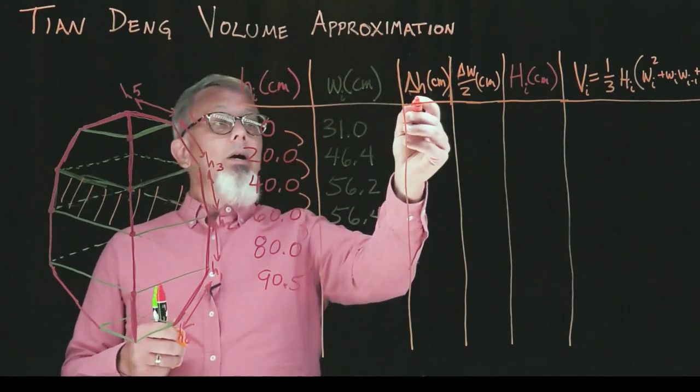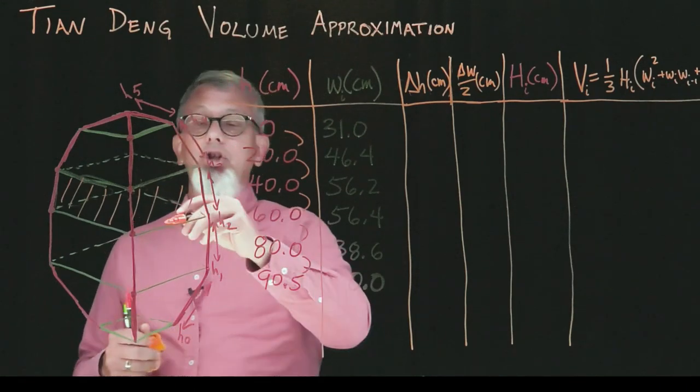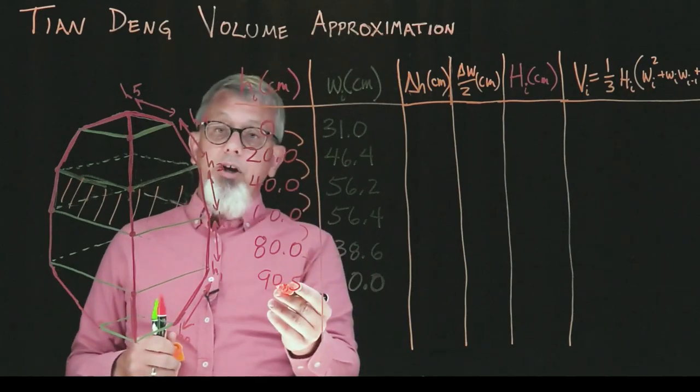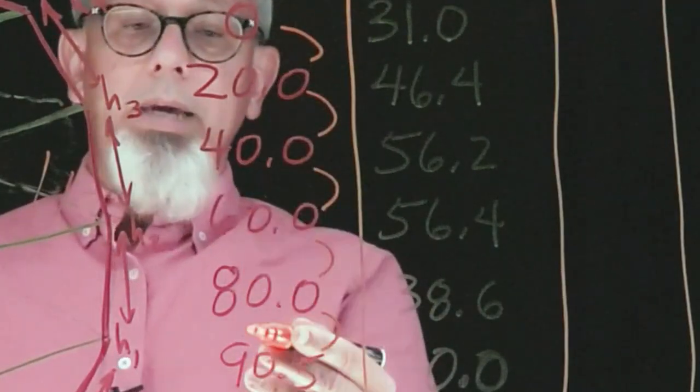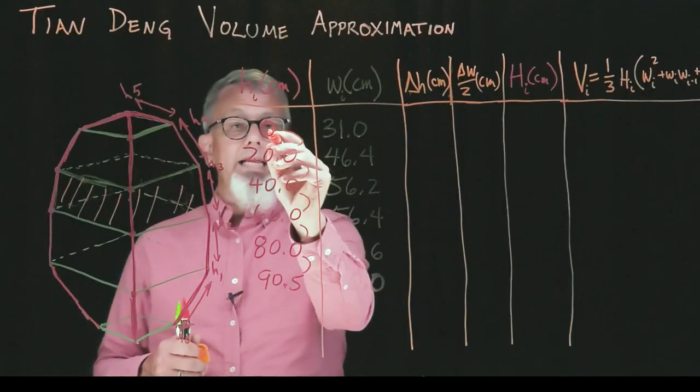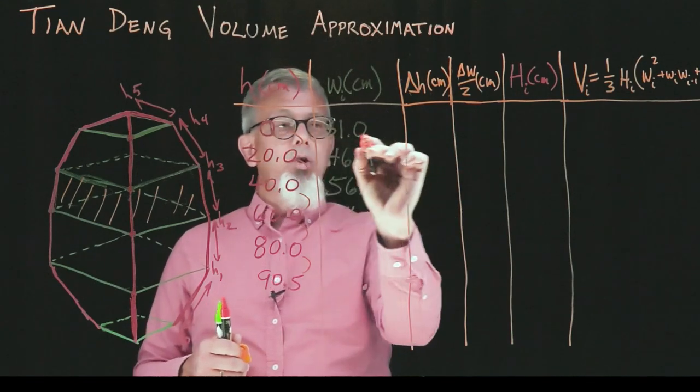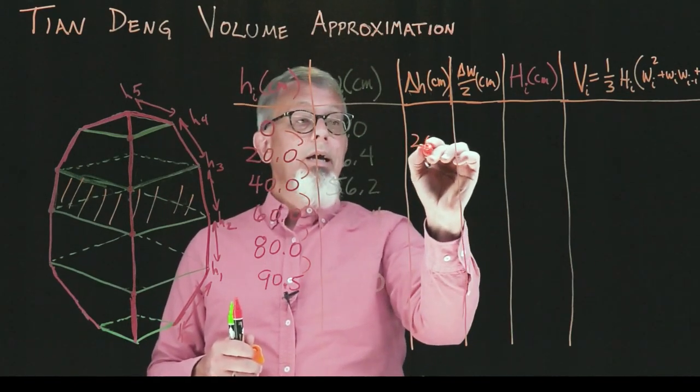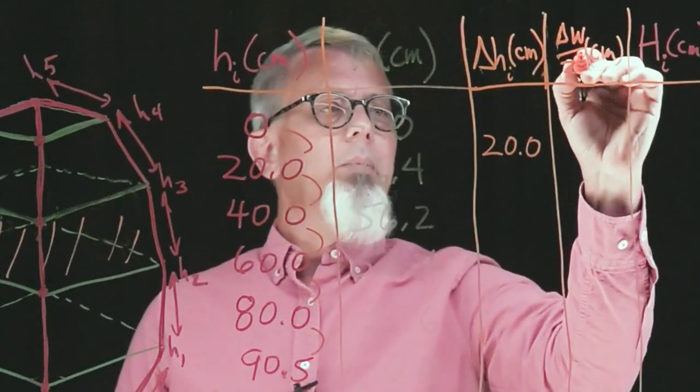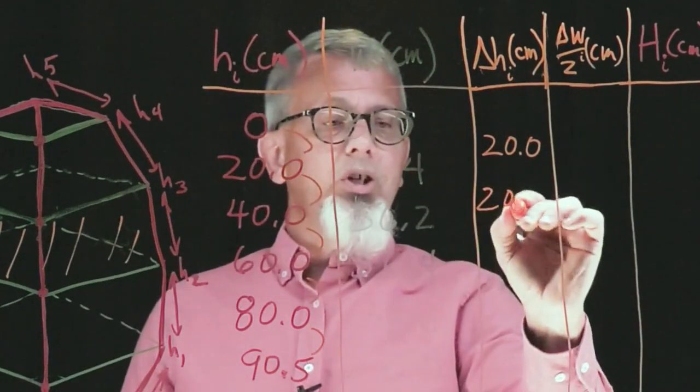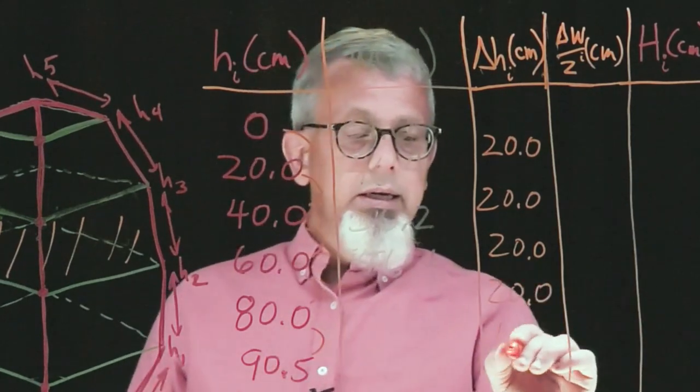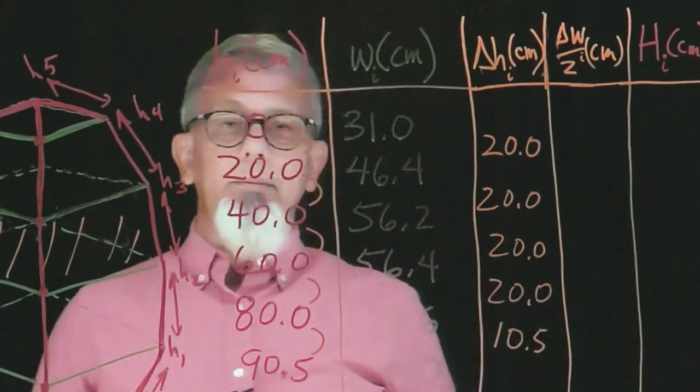Let's start by finding out my change in h, how much each section changes in height along the sides. That math is fairly straightforward. These were chosen to be increments of around 20 centimeters until we got near the peak. Here's 20.0 centimeters for that first segment, then 20.0 for the second and third and fourth segments, and our last segment has a difference of only 10.5 centimeters.